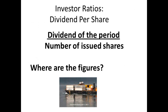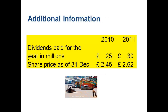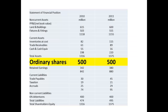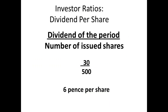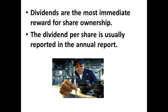The dividend per share is the dividend of the period divided by the number of issued shares. We determined previously that the number of issued shares was 500,000,000. So, £30,000,000 divided by £500,000,000 gives us £0.06 per share. Dividends are regarded as a reward for share ownership, and the annual report will normally report any dividends paid during the year.